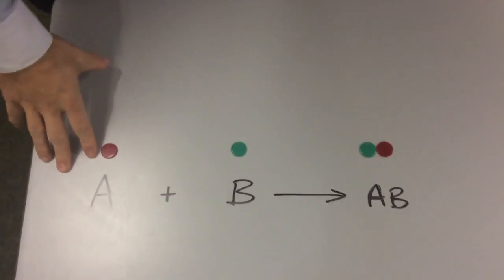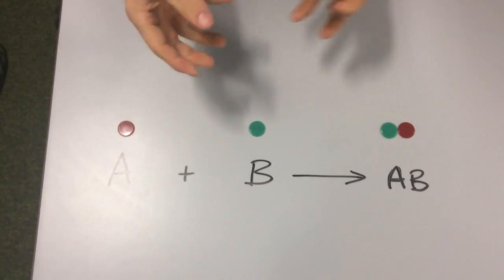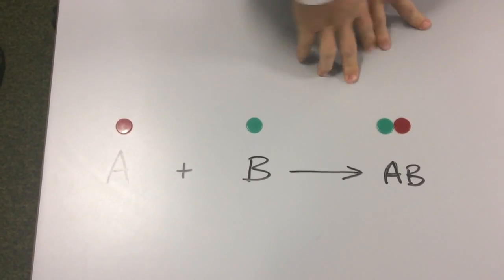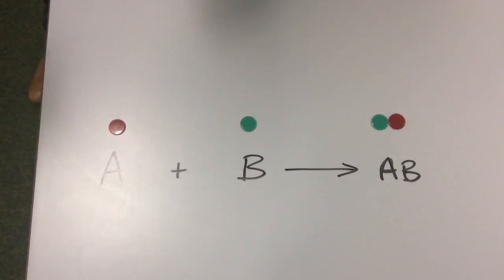Let's have a look at what's reacting. We've got particle A plus particle B, and they react together to form particle AB. We're going to be looking at this reaction today in different situations. Let's have a look at the first situation.